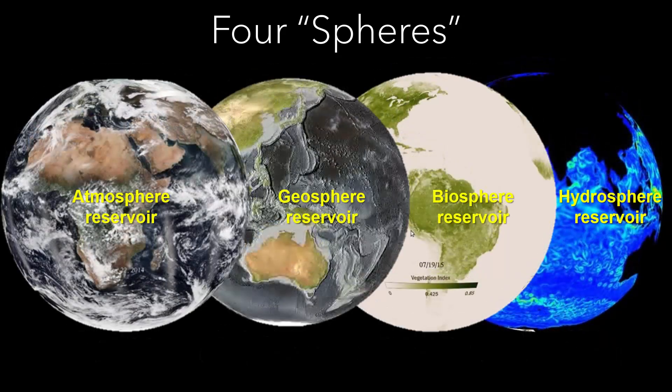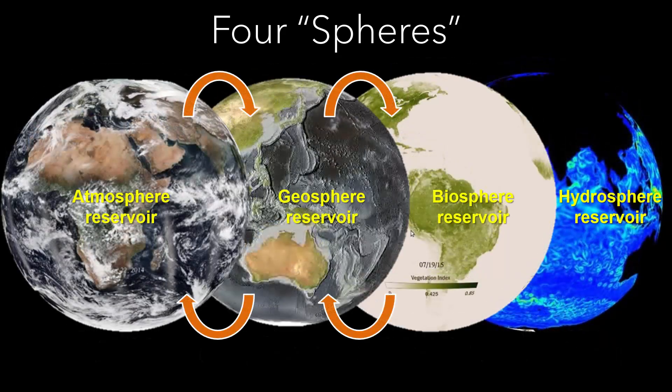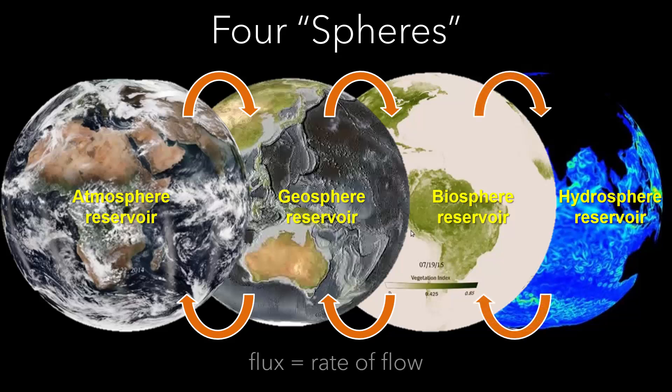Matter cycles between these system components. Scientists think of the movement of matter as the rate of flow or flux of materials moving into and out of a series of reservoirs.